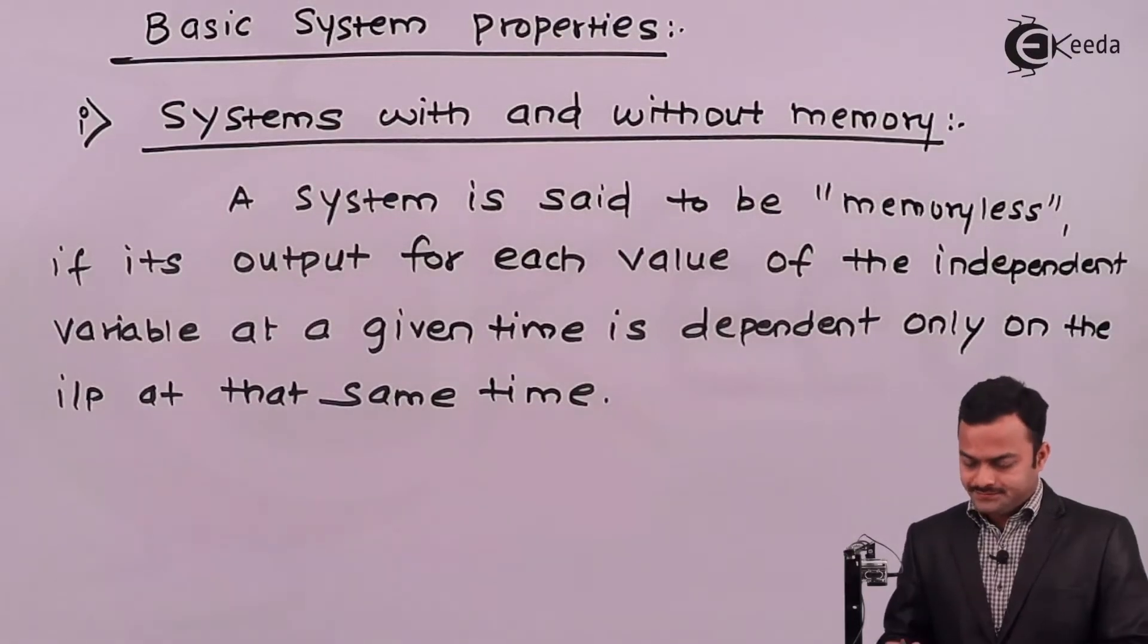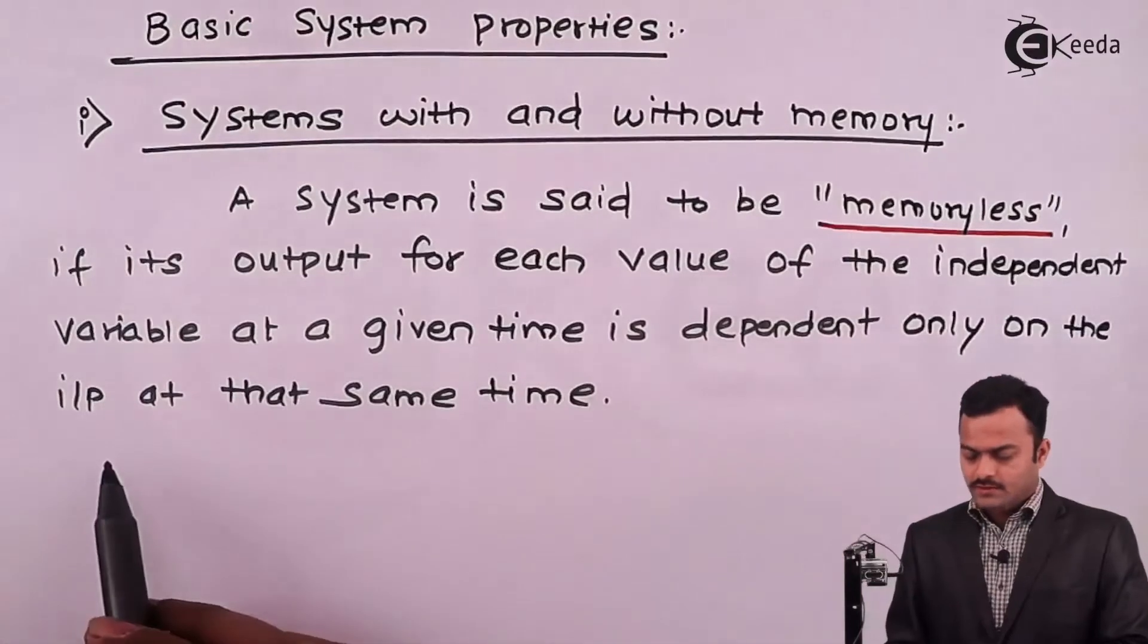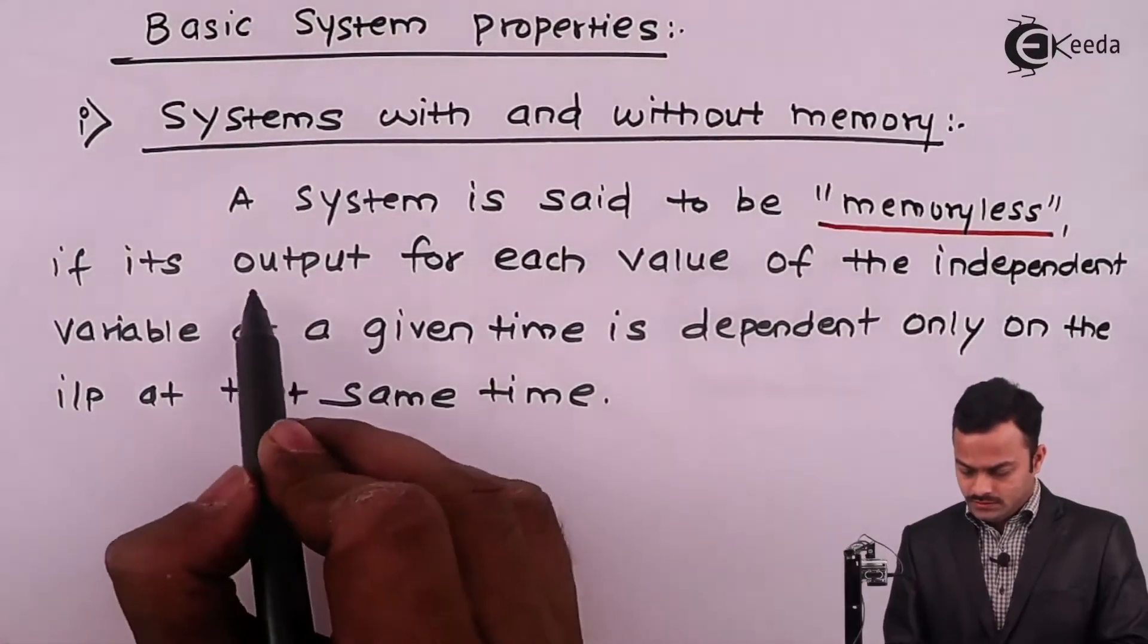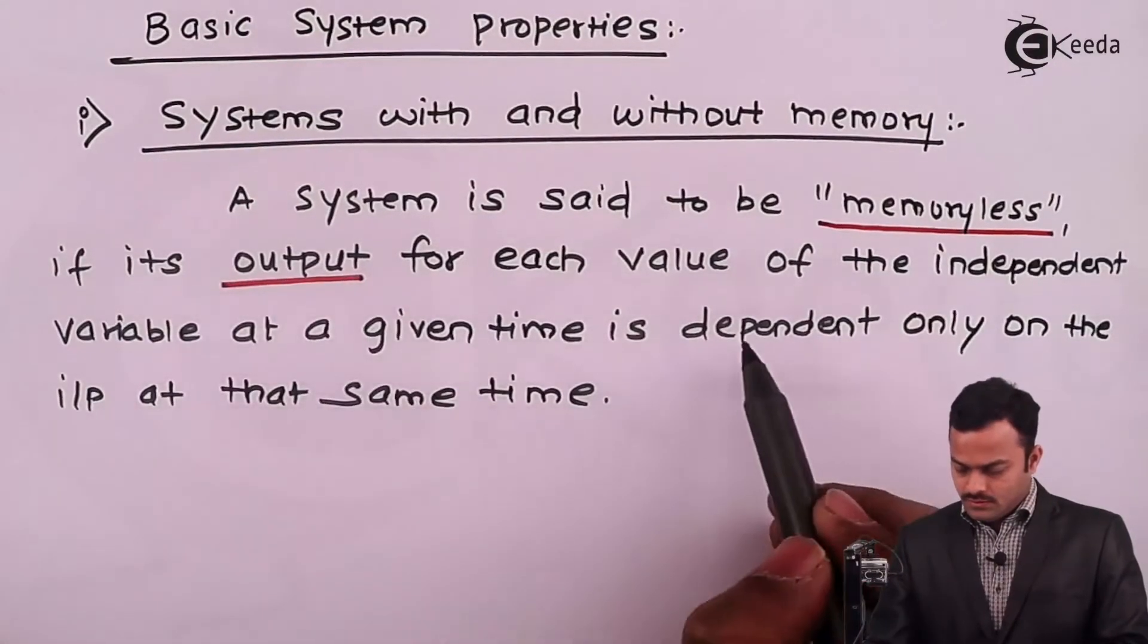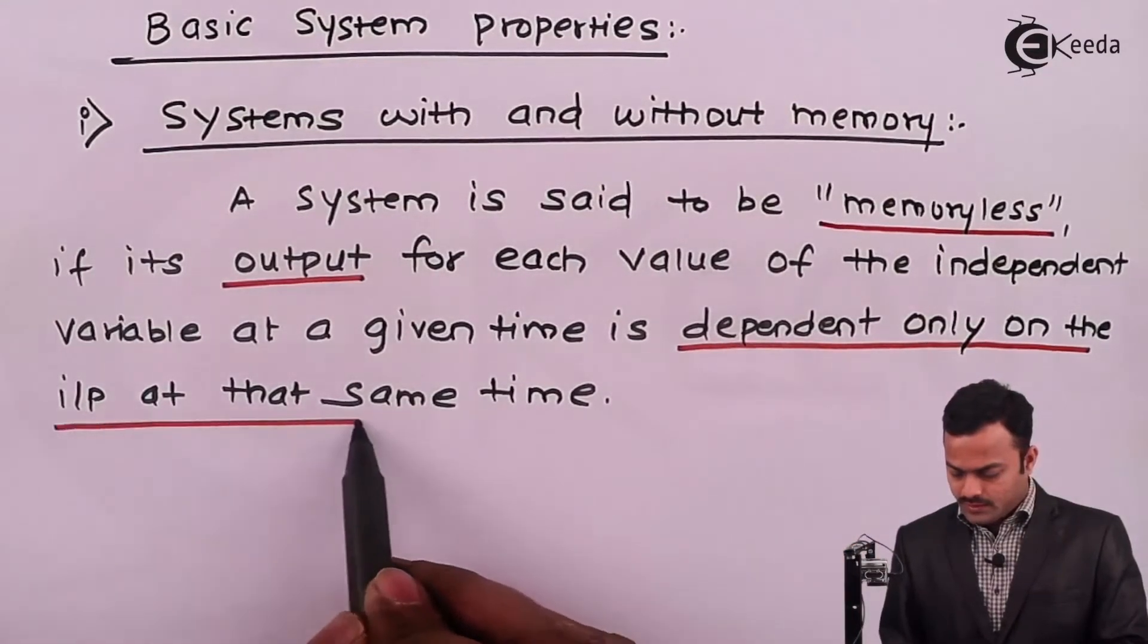The key words are this: a system is said to be memoryless when the output depends only on the input at that same time.